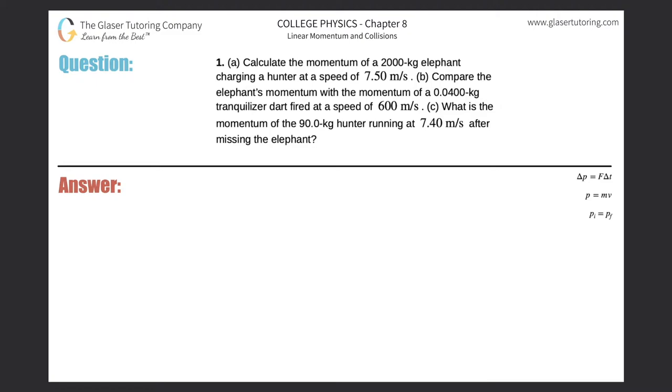Number one, letter A. Calculate the momentum of a 2,000 kilogram elephant charging a hunter at a speed of 7.5 meters per second.